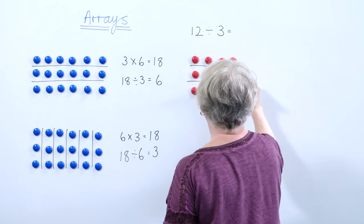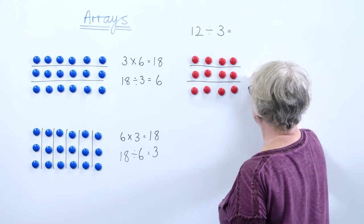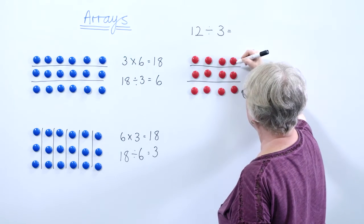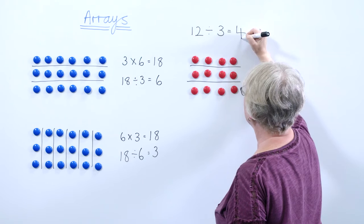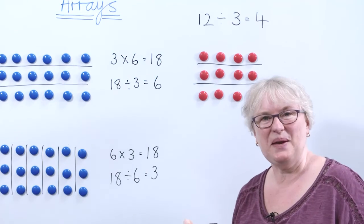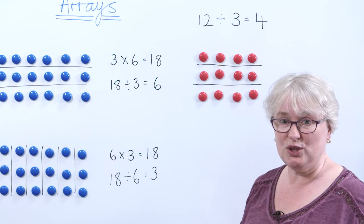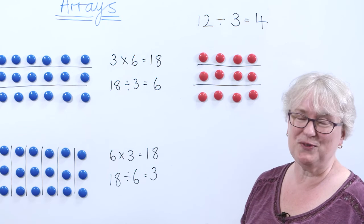One, two, three. I can see that 12 divided by 3 is going to give me 4. So there we are. That's how you can use an array to show multiplication or division.